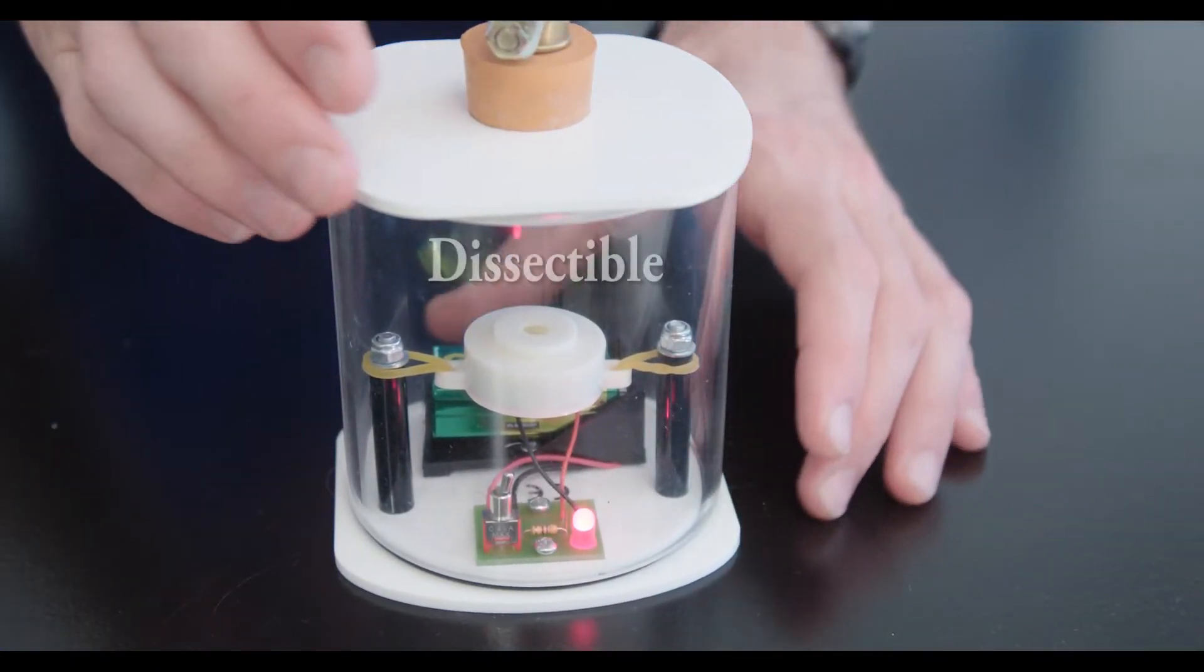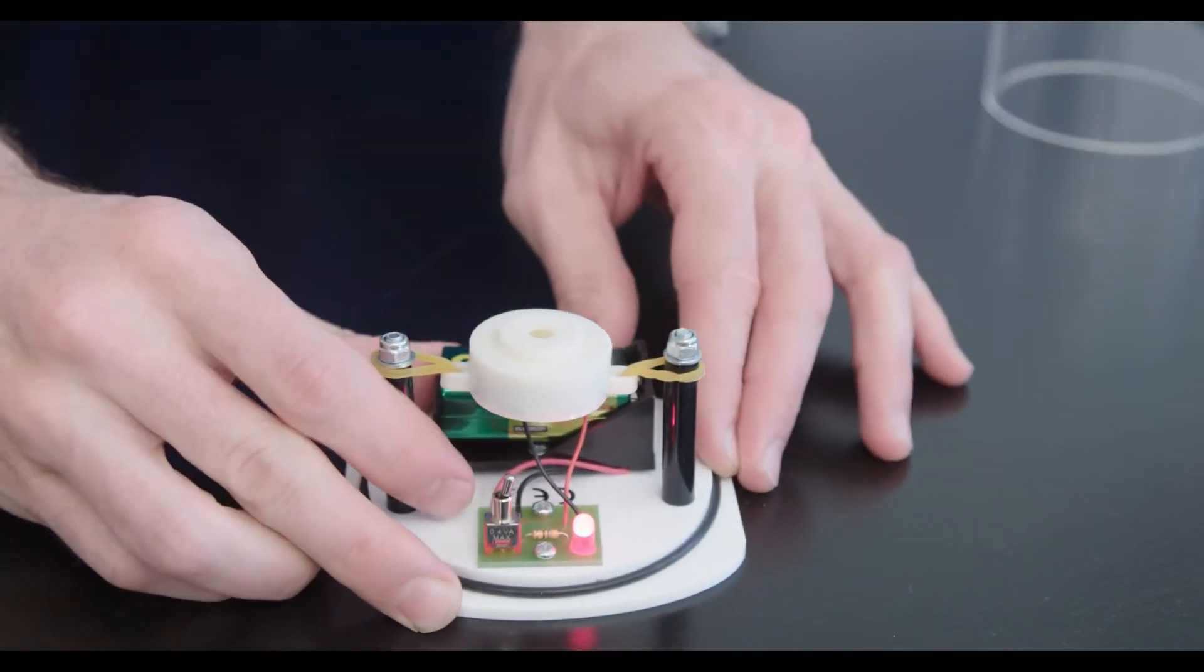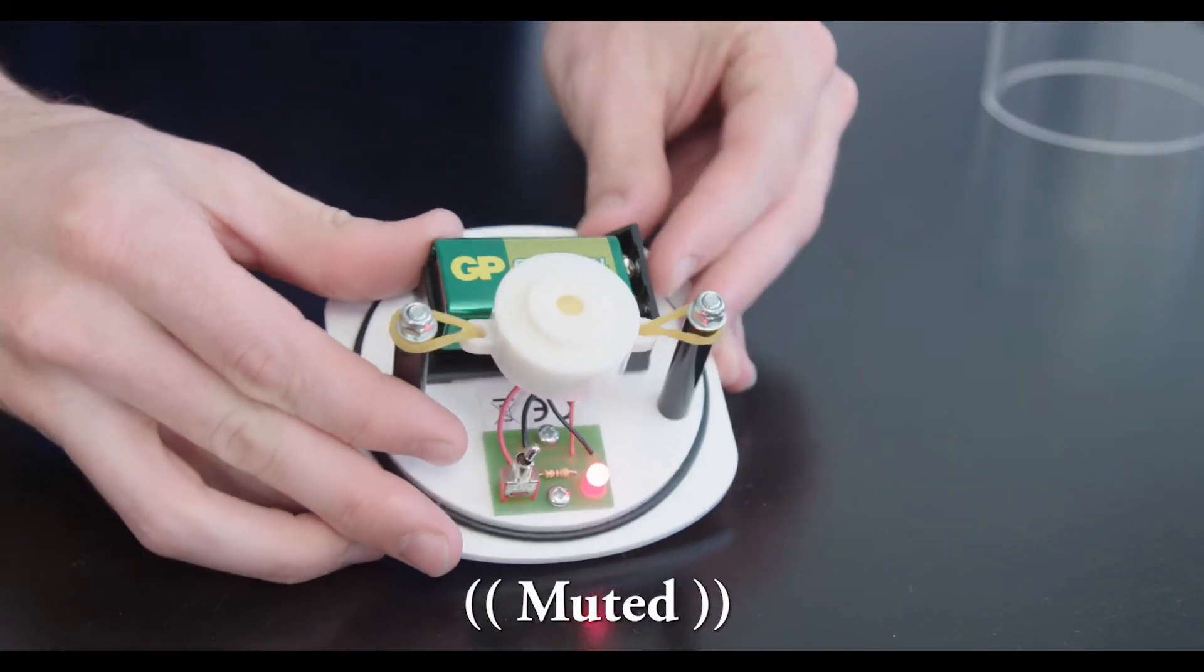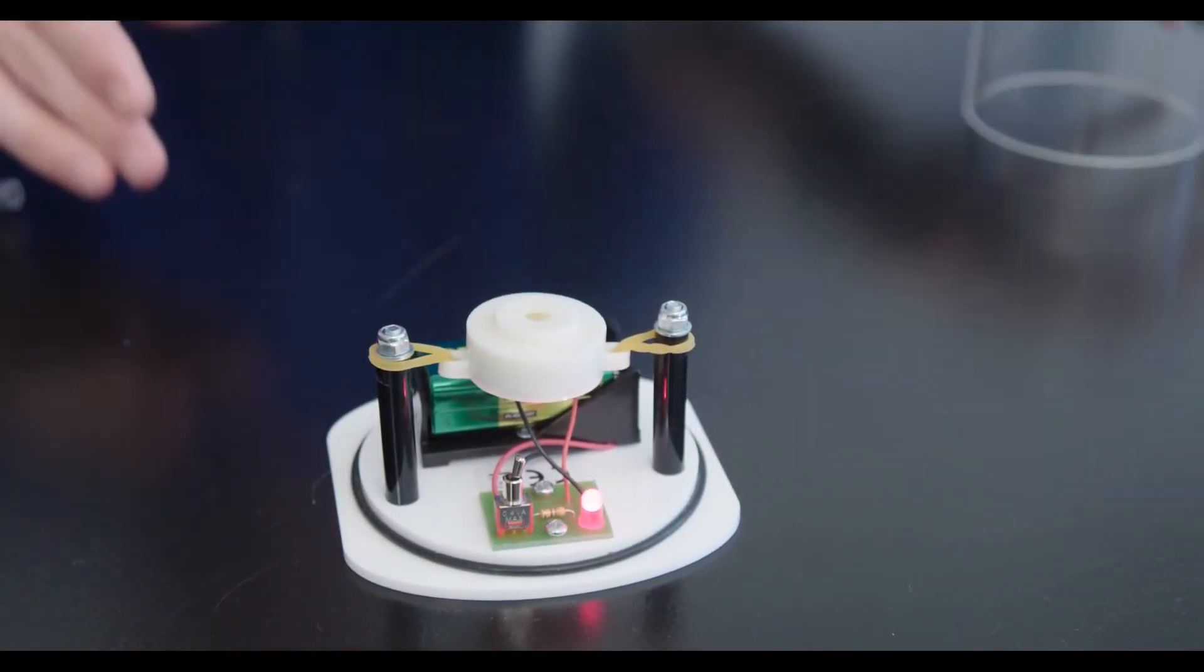The jar itself is dissectable so you can see the individual parts. The red light is there to make sure that you know that the sound is on even if you can't hear it. It also indicates that light can always travel even through a vacuum.